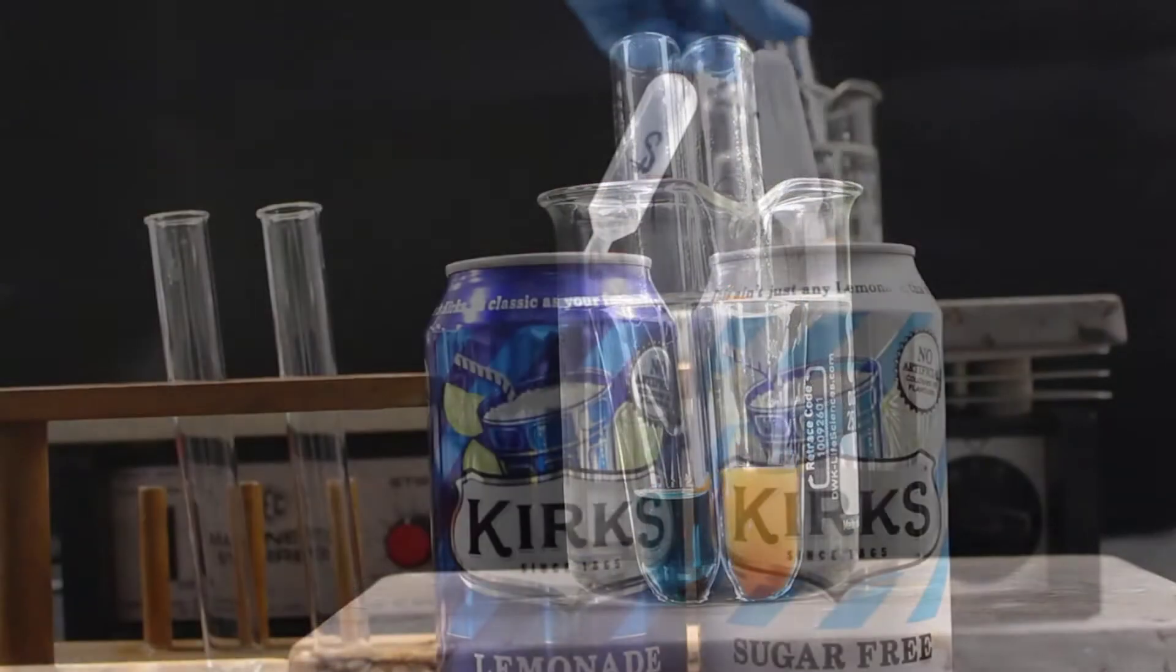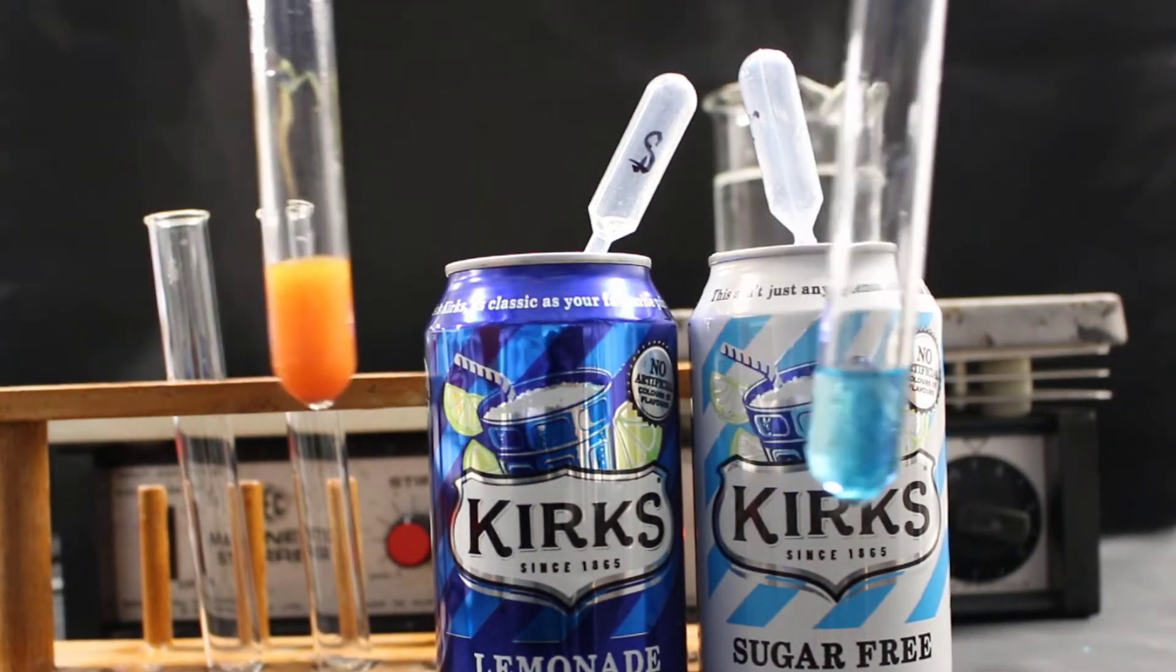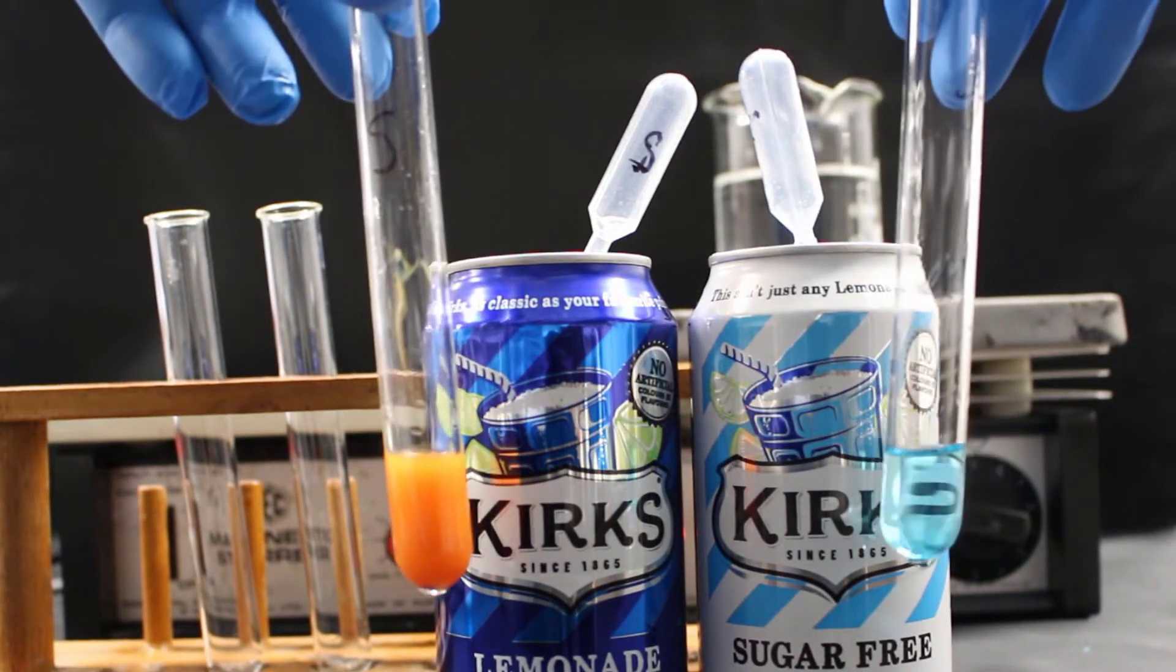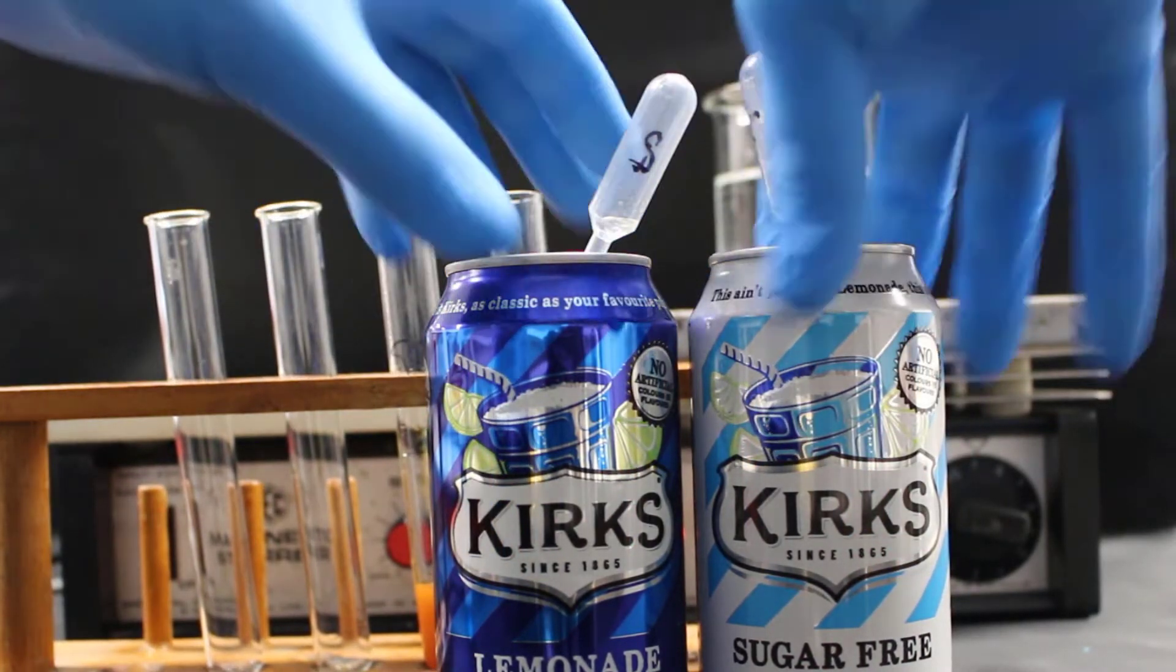The positive result for the Benedict's Test is a red brick or bright orange color. So as you can see, the sugar lemonade contains glucose and the sugar-free lemonade contains no glucose.